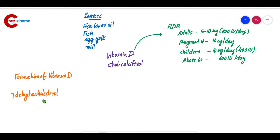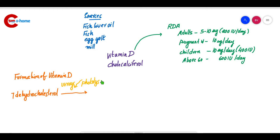Vitamin D is formed from 7-dehydrocholesterol, which is an intermediate in cholesterol synthesis. It is present inside our epidermis. When UV rays fall on the skin, by photolysis, this 7-dehydrocholesterol is converted into secosterol, and that secosterol is the provitamin.